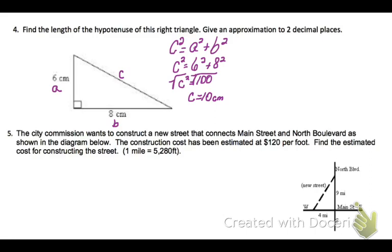A city commission wants to construct a new street that connects Main Street and North Boulevard, as shown in the diagram below. So, you can see that the new street is the dashed one. The construction cost has been estimated at $120 per foot. Not per mile, but per foot. Find the estimated cost for constructing the street. And then they give us a conversion factor to change miles to feet. Because the information they give us on this diagram is in miles.